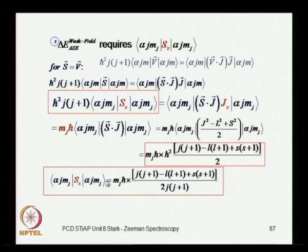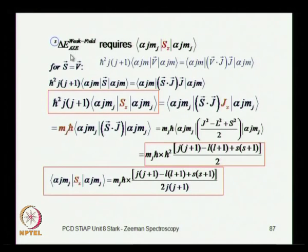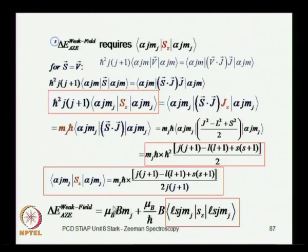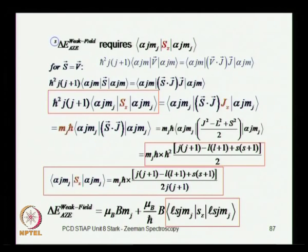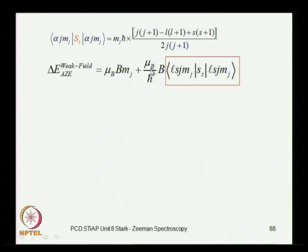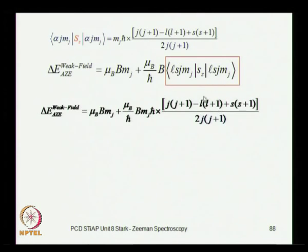You can write the matrix element, which is what you need: you cancel ħ² with ħ², move J(J+1) to the denominator, and this is the result we were looking for — precisely the term needed to get the correction for the weak field Zeeman effect. This correction comes along with the other term from the J term itself, and together these give the perturbative correction when the magnetic field is weak and the spin-orbit interaction takes over.